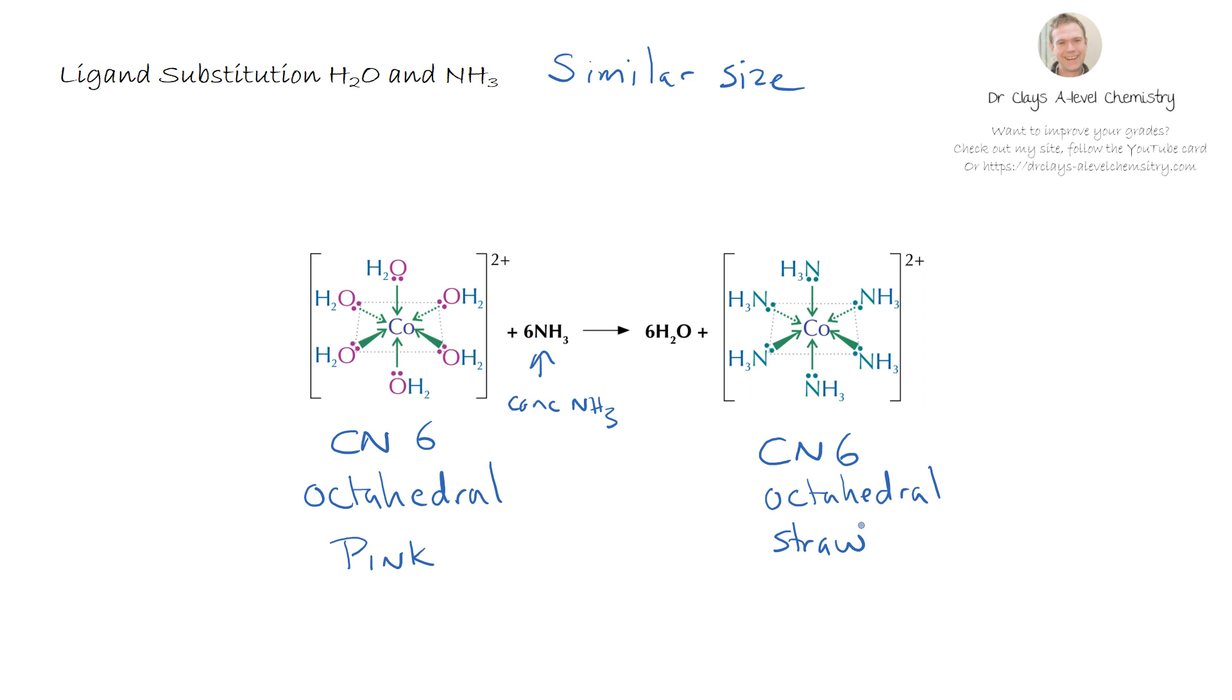Just to complete here if you are going to write the equation for this reaction we start off with 6 waters with a 3 plus charge, we are adding 6 ammonias. And we would form cobalt NH3 6, a neutral compound, 3 plus plus the 6 waters at the end.